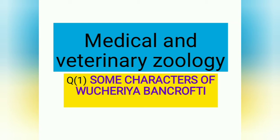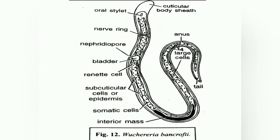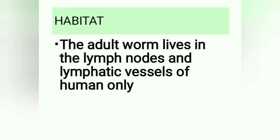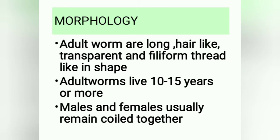Our first question is: some characters of Wuchereria bancrofti. Please take a screenshot of this picture. Wuchereria bancrofti causes Bancroftian filariasis and elephantiasis. Habitat: the adult worm lives in the lymph nodes and lymphatic vessels of humans only. Morphology: adult worms are long, hair-like, transparent, and filiform (thread-like) in shape.